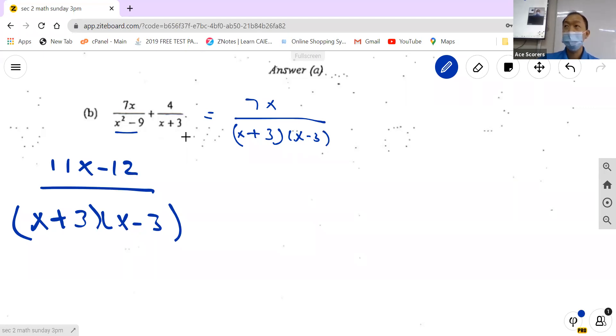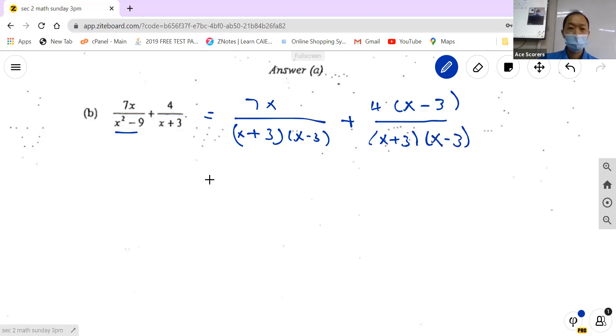The three special algebraic formulas, right? This is correct. Here we have to, because this part is x plus 3 times x minus 3, the one on the right side we're going to multiply with x minus 3 over x minus 3. This is just to create the common denominator which happens to be (x+3)(x-3). Then after that we combine.